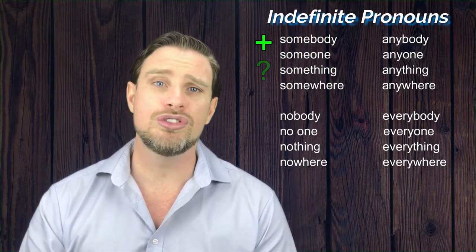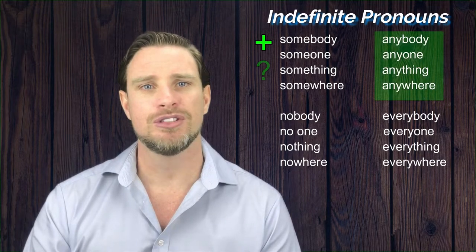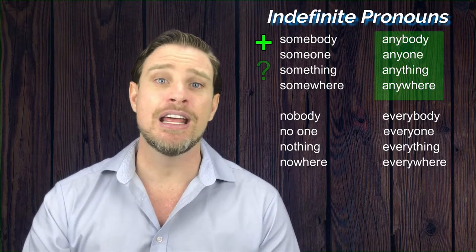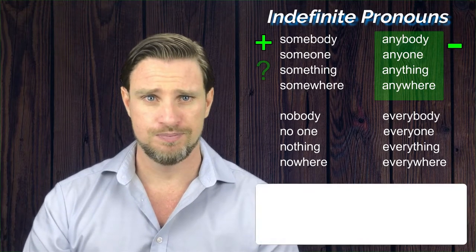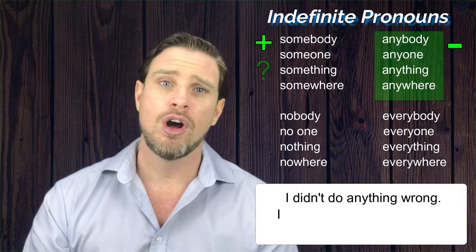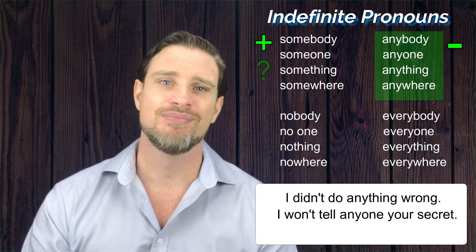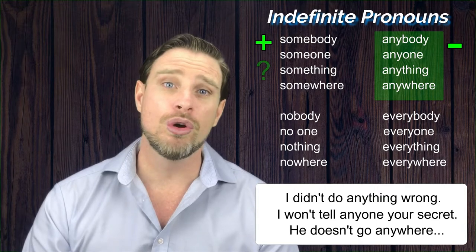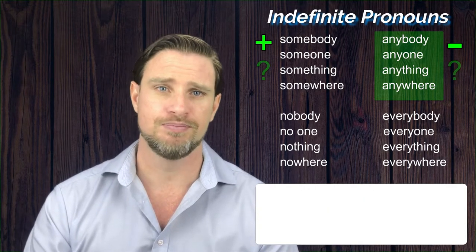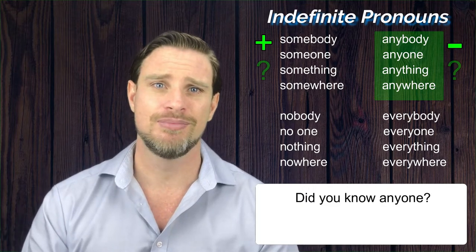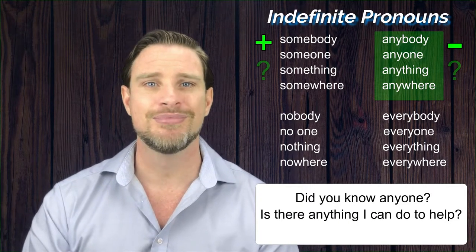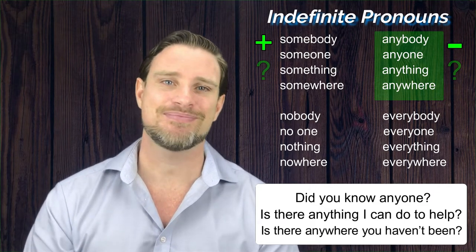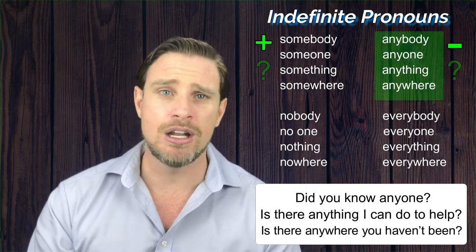Conversely, we use indefinite pronouns starting with 'any' — so anybody, anyone, anything, and anywhere — in negative clauses. For example: 'I didn't do anything wrong.' 'I won't tell anyone your secret, I promise.' These are negative sentences. We also quite often use these pronouns in questions: 'Did you know anyone at the meeting?' 'Is there anything I can do to help?' 'Wow, you've travelled so much. Is there anywhere you haven't been?' So we don't use these pronouns in positive clauses.